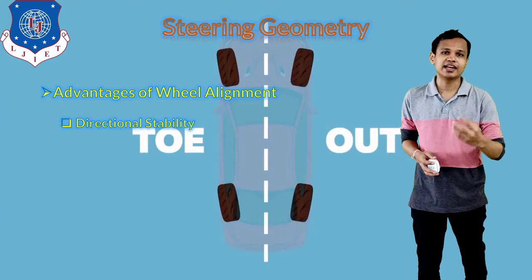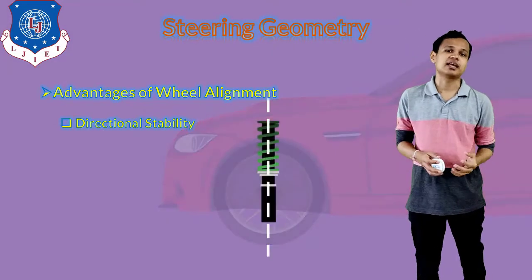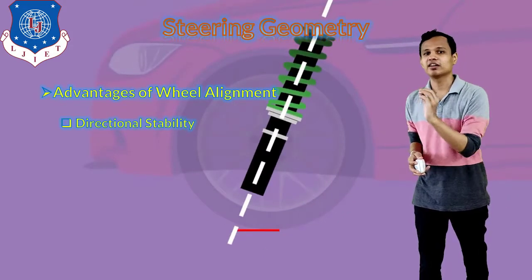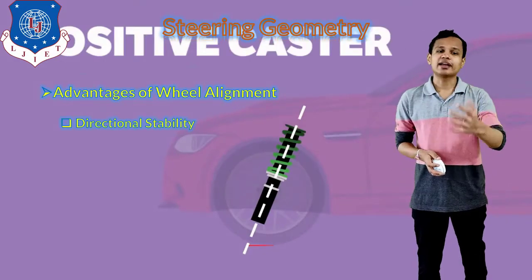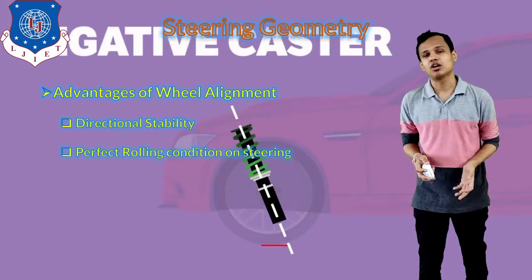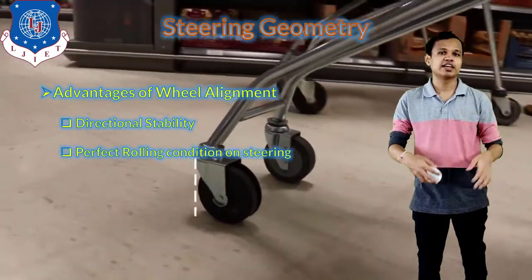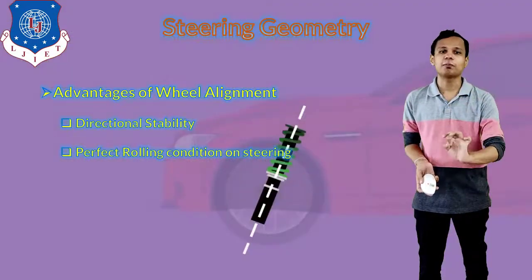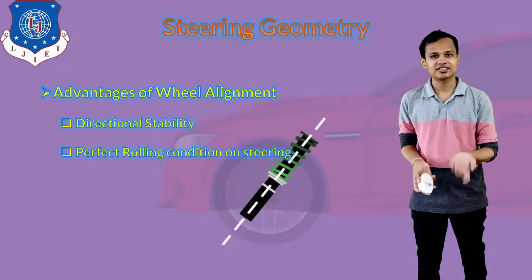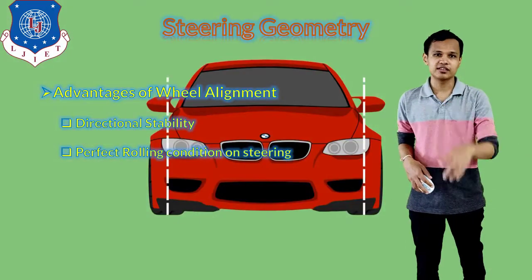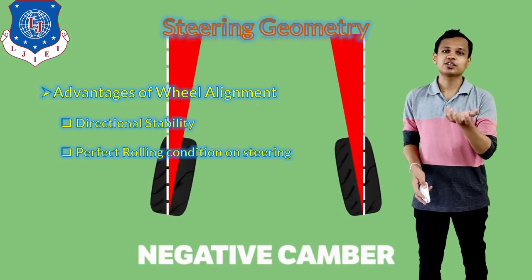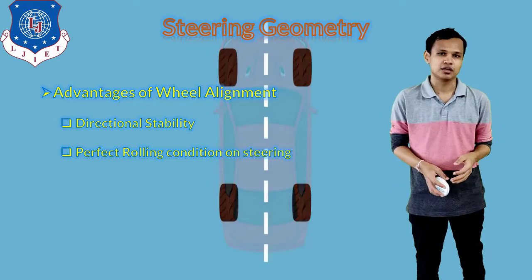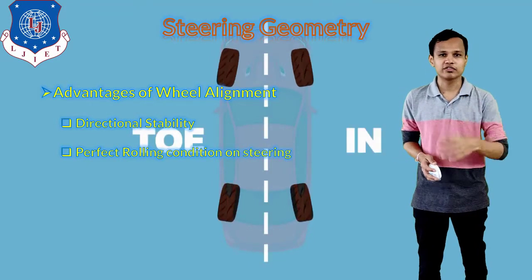The advantages of wheel alignment are: first, it will provide directional stability. Whenever we are driving the vehicle, it will be driven in a stable manner. Second is the perfect rolling condition on the steering — whenever the vehicle is rolling in a straight direction, the steering will be proper. There are chances the vehicle will pull towards one side if the camber angles of the two tires are not equal, so these things are very important for vehicle driving.